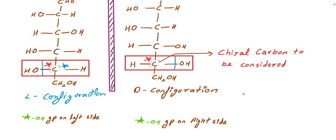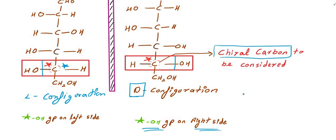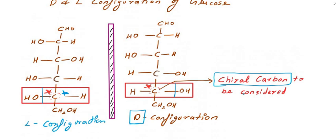When OH is on the right side, it becomes the D configuration. We compare using the reference carbon — the fifth carbon in glucose. As you can see, the OH at that position determines whether it is D or L. The current configuration at the reference carbon on the right side gives us the relative configuration. The next configuration, based on understanding the right side, is the absolute configuration.